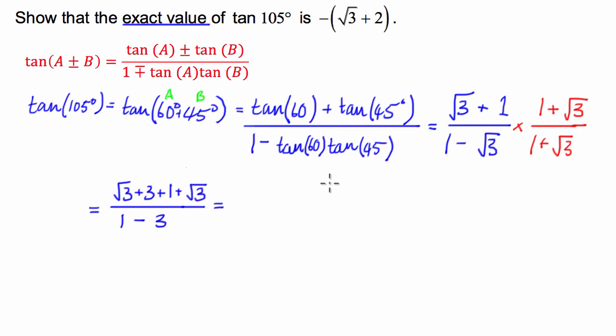Cool so we can put our like terms together and in the denominator we have negative 2 and in the numerator we have 2 root 3 plus 4.